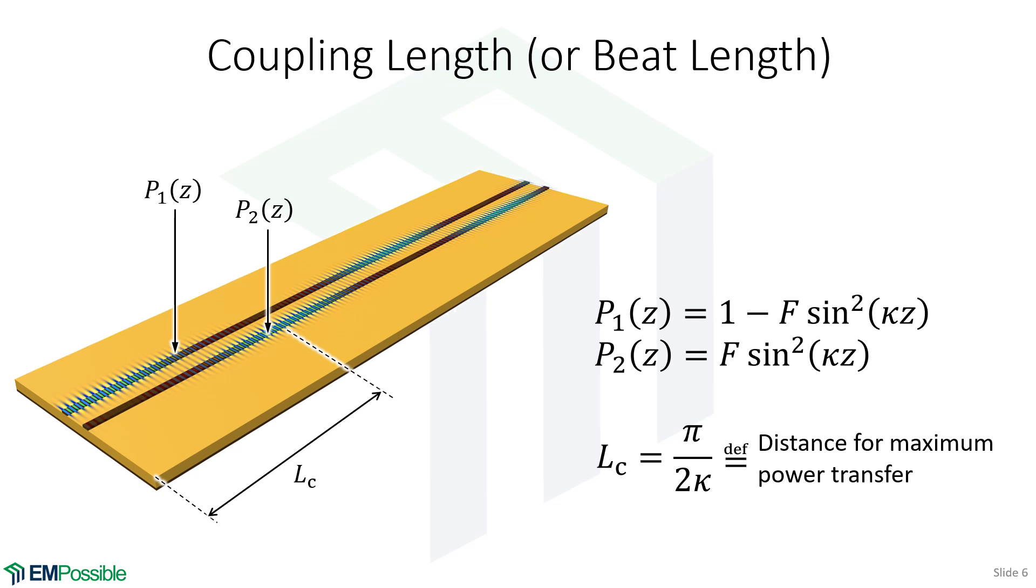So let's look a little bit more at this kappa. If I calculate π over 2κ, this calculates a very special length—and that's the length over which you get maximum power transfer from one line to the other. So at the lower left here, we're launching 100% of our power into this first waveguide or transmission line. Because these lines are close, the power couples from one over to the other. But at some point there's 100% power over in this second line, or even if it's not 100%, there's some maximum that it hits here. And so that length from the beginning to the maximum power in the second guide—that's the coupling length, also sometimes called the beat length.